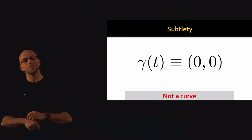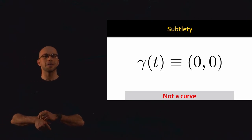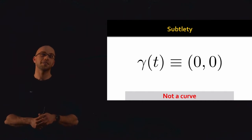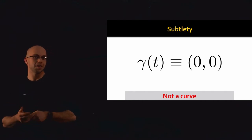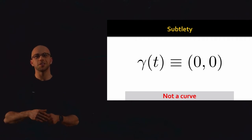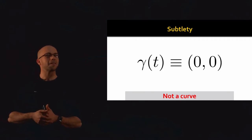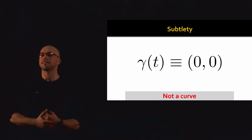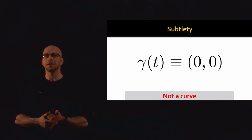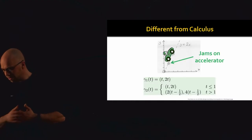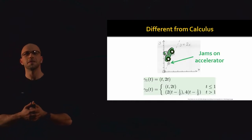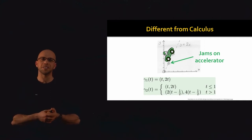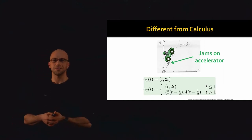Rather than just saying a curve is a function gamma(t) and moving on, we have to be more careful to capture the subtleties. You might say, fine, so maybe a curve is gamma(t) with the condition that gamma prime is not equal to 0. You're starting to get there, but let me give you another counterexample. Here I'm giving you two different curves, gamma₁(t) and gamma₂(t) — at least two different functions.